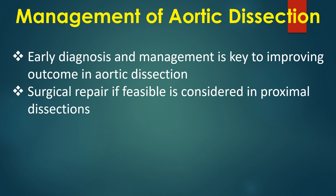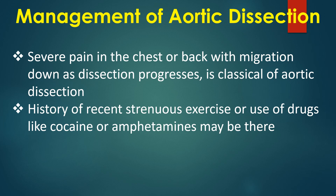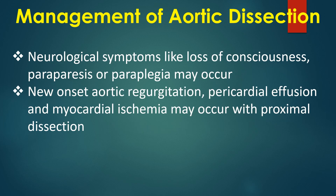Surgical repair is considered in proximal dissections, while distal dissections call for endovascular repair in the presence of malperfusion or imminent rupture; uncomplicated distal dissections may be managed medically. Severe chest or back pain with migration distally is classical. Neurological symptoms such as loss of consciousness, paraparesis, or paraplegia may occur. New-onset aortic regurgitation, pericardial effusion, and myocardial ischemia may occur with proximal dissection.